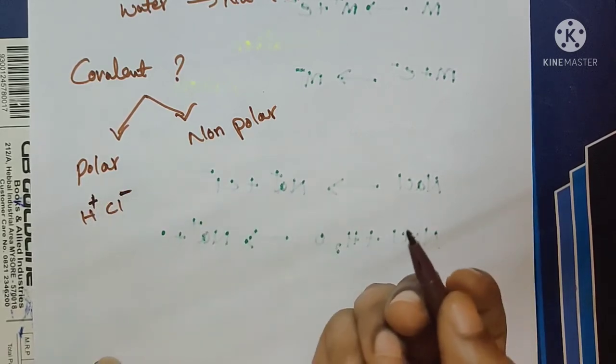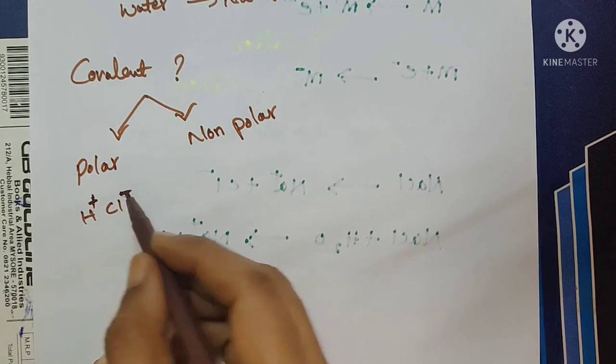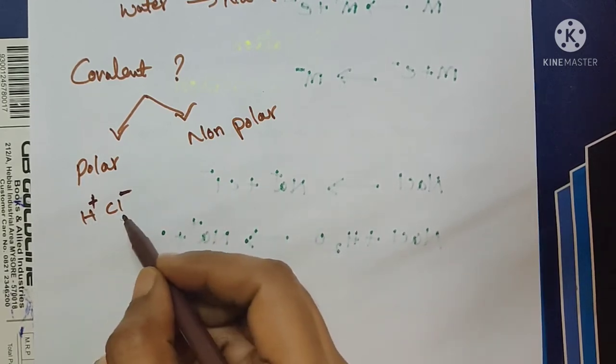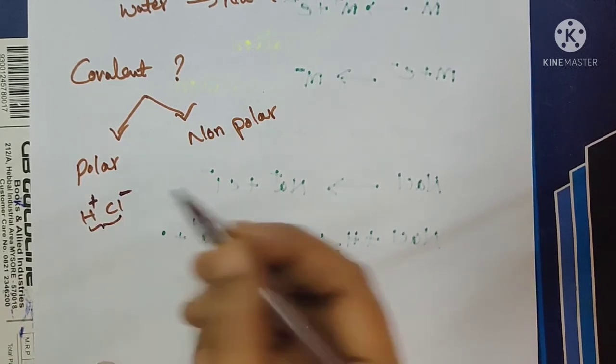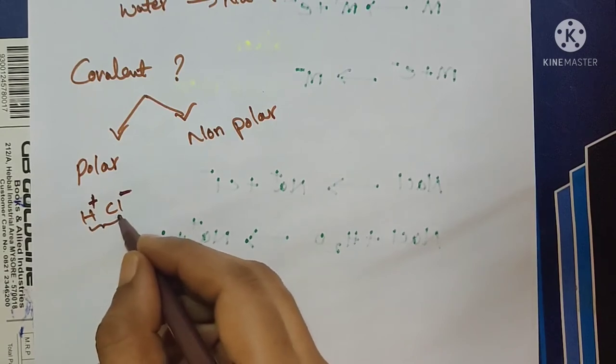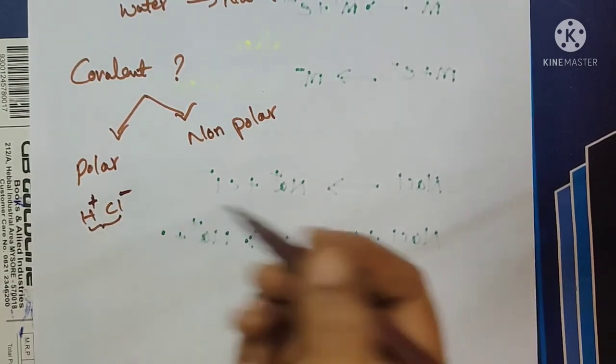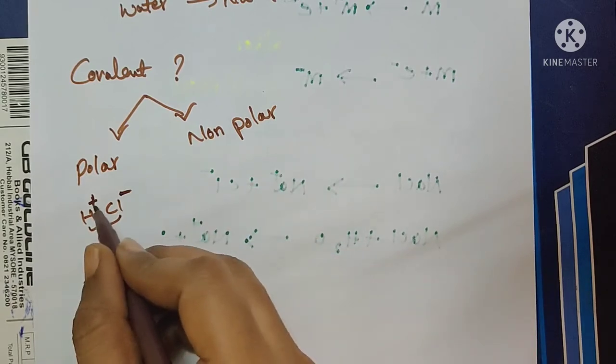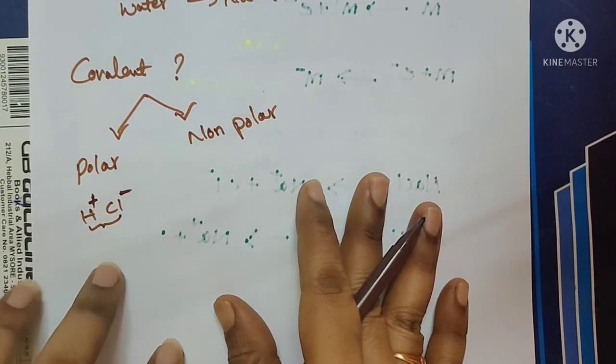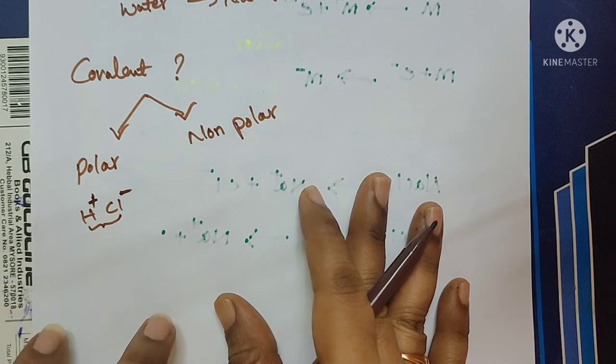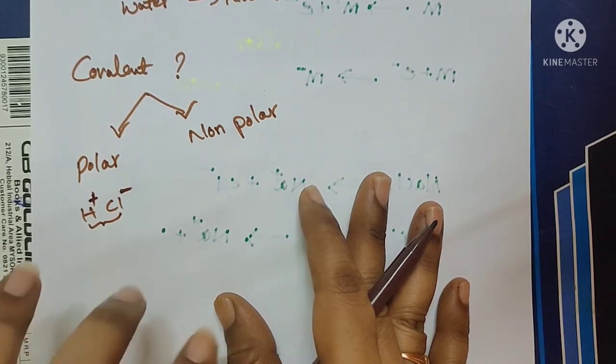In the polar covalent compounds, we will see the positive and negative ions. How can the positive and negative ions present in the HCl? Based on the electronegativity difference between the hydrogen and chlorine. The chlorine has more electronegativity than hydrogen. So, slightly positive and negative charges are formed in the presence of hydrochloric acid when it dissolves in the water.